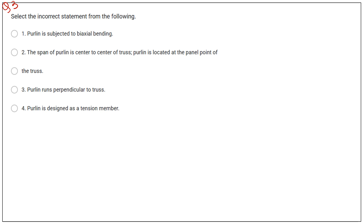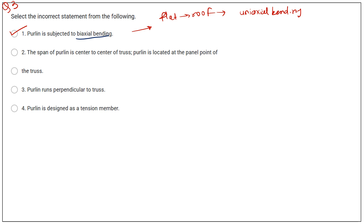Third question: select the incorrect statement from the following. First option — purlin is subjected to biaxial bending — is correct, because when the roof is flat, uniaxial bending occurs, but in the case of a truss with an inclined or sloping roof, biaxial bending happens. The second option — span of purlin is center to center of truss — is also correct.